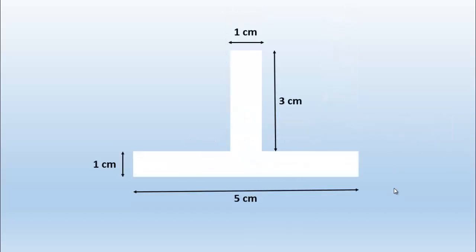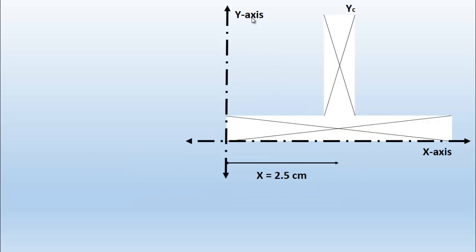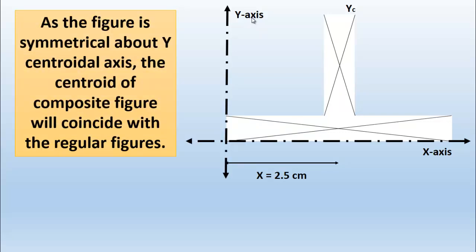As you can see, the figure is symmetrical about the vertical centroidal Y-axis, meaning there is a centroidal axis that divides this figure into two equal parts. In this condition, the horizontal centroidal distance x̄ can be determined by dividing the total base length — 5 centimeters — by 2, giving x̄ = 2.5 centimeters. This result is obtained using the property of symmetry and applies only to symmetrical figures.